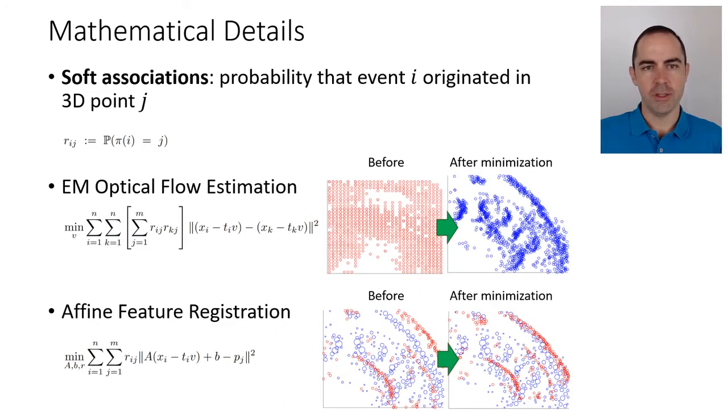In more details, there are some soft associations, which is the probability that an event originated by a 3D point or an edge j. These are the so-called r_ij. These probabilities are saying that the probability of the i-th event is independent from the probability of the k-th event. The first step is coming up with the feature to track, and that's basically estimating the velocities of the optical flow such that the warped events, x_i minus t_i v, and x_k minus t_k v, line up and you get a sharp, distinctive pattern.